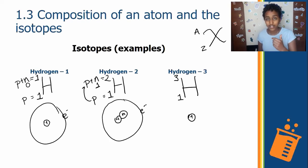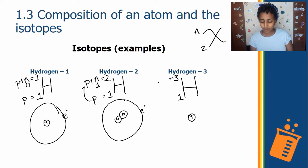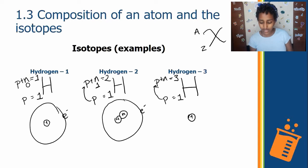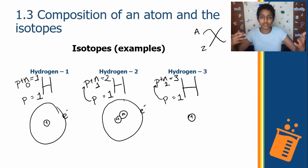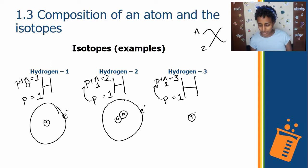For hydrogen-3, protons plus neutrons give us the mass number 3. We still have one proton, so there must be two neutrons, because 1 + 2 = 3. Hydrogen-3 has two neutrons in its nucleus.